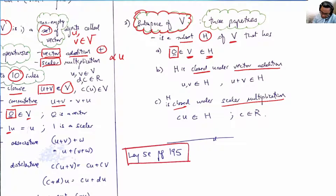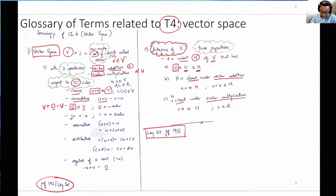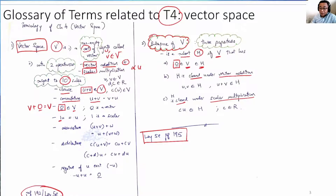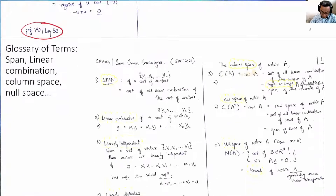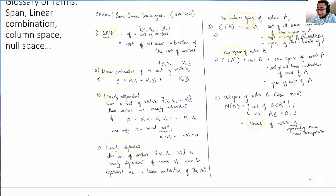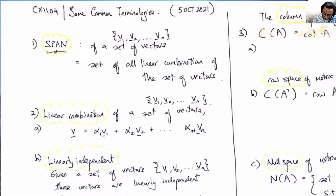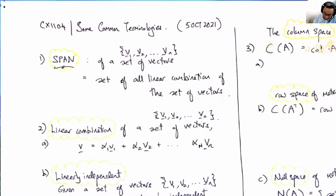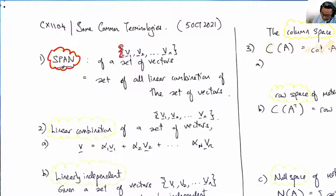The details can be found in Lay, 5th edition, page 195. Once we've figured out subspace and vector space, we can go to other terminologies. Let's introduce the word span. Span is used in the following manner: a vector space is spanned by the following set of vectors.